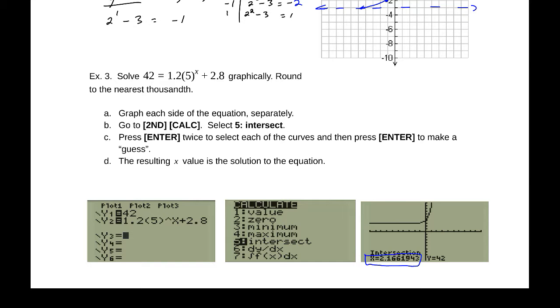So, solving that equation, I get x equals two point, and we'll round to the nearest thousandth, 2.166.